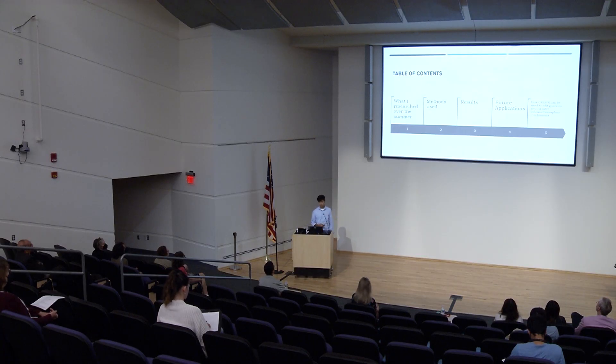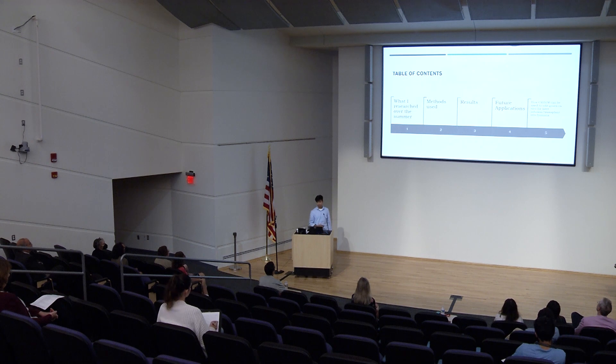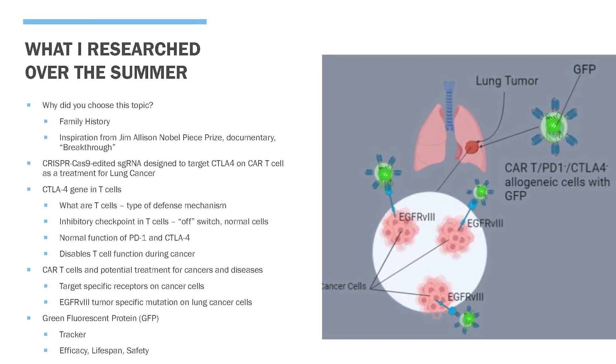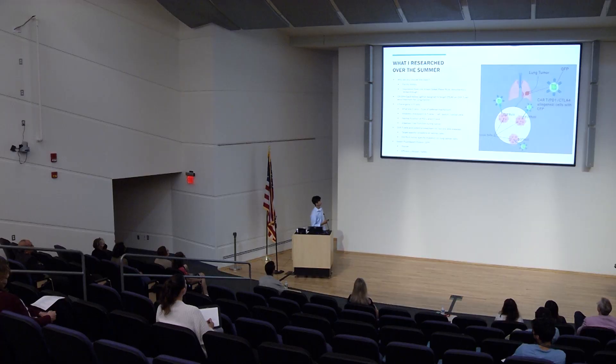Now I'm going to move on to what I researched over the summer, the methods I used, results, and future applications — including how CRISPR can be used to edit genes ex vivo for later infusion and transplant into humans. I chose this topic based on my family history as well as inspiration from a documentary on Jim Allison, who won the Nobel Prize in 2019 for discovering CAR T-cells, a cancer immunotherapy treatment strategy. Over the summer, I researched how CRISPR could be used to design a single-guide RNA to target the CTLA-4 gene on a CAR T-cell for treatment of lung cancer.